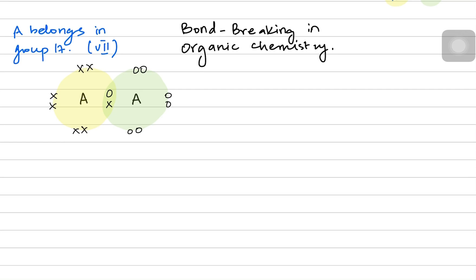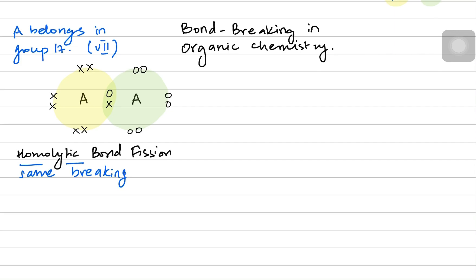If A wants to break the bond with another atom A, the most common category here is homolytic bond fission. The word 'homo' means same and 'lytic' means breakdown. Both atoms break their bond in a way that each atom receives one electron from the bond pair. Neither atom becomes positive or negative — each receives its own electron back from the shared pair.